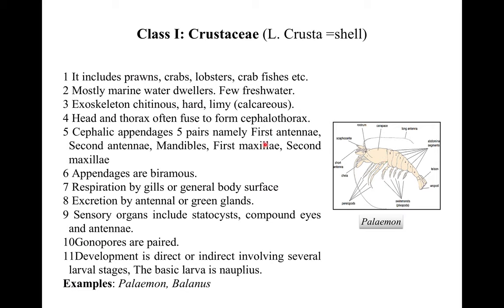Cephalic appendages are in five pairs: first antennae, second antennae, mandibles, first maxillae, and second maxillae. All appendages are biramous. Respiration occurs by gills or general body surface in small forms. Excretion occurs by antennae or green glands. Sensory organs include statocysts, compound eyes, and antennae — statocysts for balancing, compound eyes for vision, and antennae for sensing.